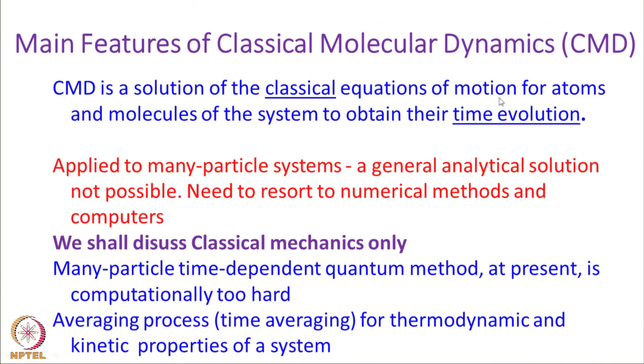What are the main features of classical molecular dynamics? It is a solution of the classical equations of motions for atoms and molecules of any system to obtain its time evolution. Applied to many-particle systems, a general analytical solution is not possible — there are no formulae for positions and momenta as a function of time, except for a two-body problem like Earth and the Sun, or a hydrogen atom. Since there are more than two particles, we need to resort to numerical methods and computers.